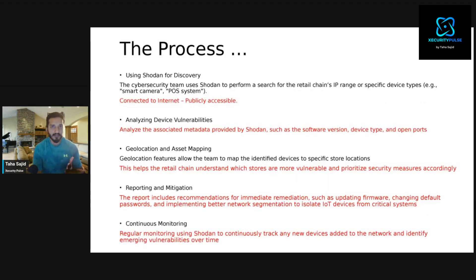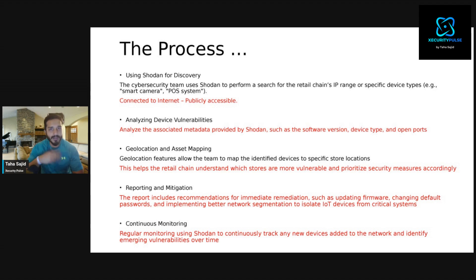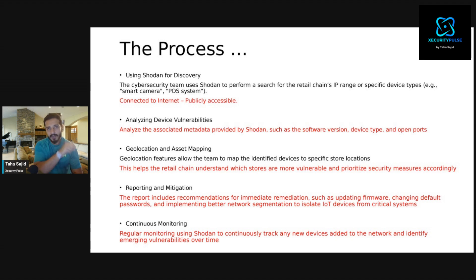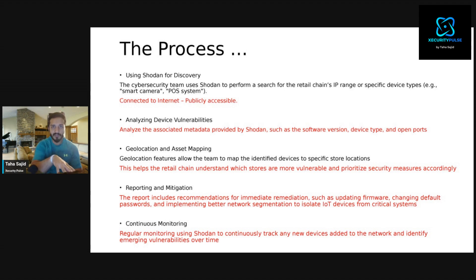The procedure uses a tool called Shodan. Shodan is available on the web with a free version as well as a paid version, and the free version already offers a lot. The cybersecurity team uses Shodan to search for the retail chain's IP range or a specific device type. You can either search by IP address or type a keyword such as 'smart cameras' or 'POS systems' to see if anything is publicly accessible.